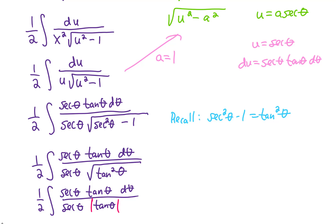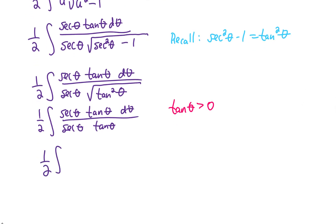Again, we're still dealing with indefinite integrals. We're going to go ahead and assume that tangent theta is positive. That allows us to get rid of these absolute values, and check out what we're left with. Everything cancels and we just get an integral of d theta.